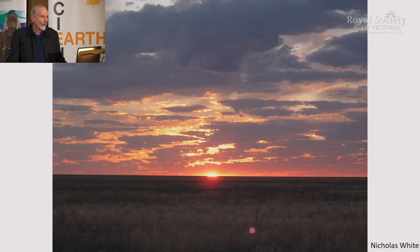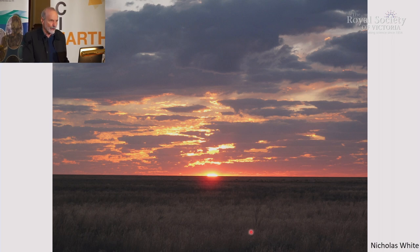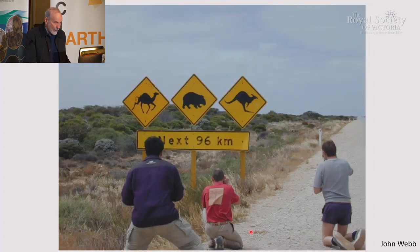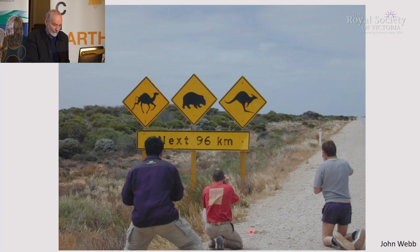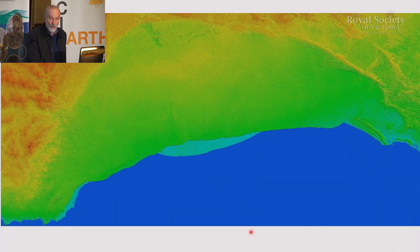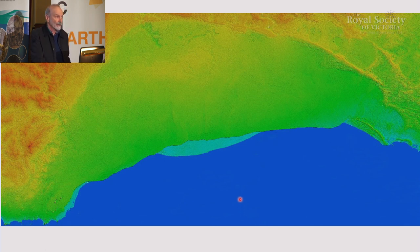Let's start with the Nullarbor. The Nullarbor is very, very flat because it used to be the bottom of the sea — you're basically looking at the sea floor, a bit eroded since then. It has the longest stretch of straight railway in the world, 478 kilometres, and some very long stretches of straight road. This is a digital elevation model — basically a big, flat, slightly elevated plain.